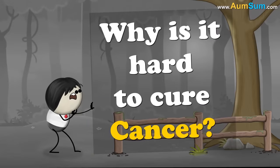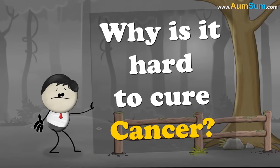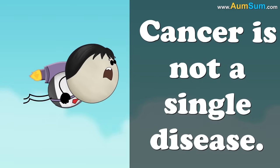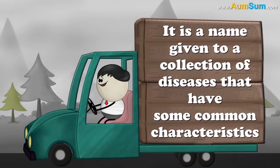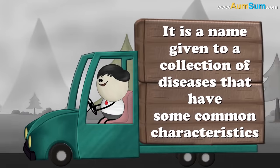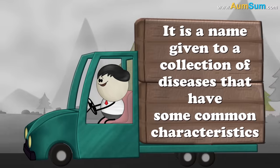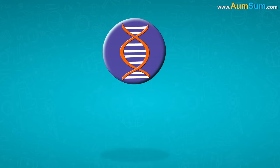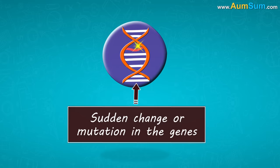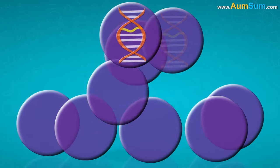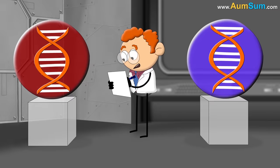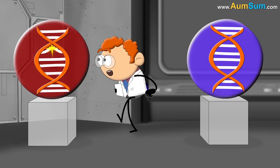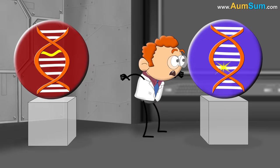Why is it hard to cure cancer? Cancer is not a single disease. It is a name given to a collection of diseases that have some common characteristics. Cancer usually begins when there is a sudden change or mutation in the genes present in our cells. This leads to uncontrolled cell division. It is hard to cure cancer because every cancer is caused by a different set of genetic mutations in different types of cells.